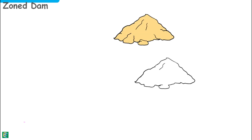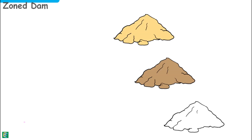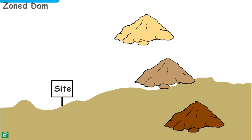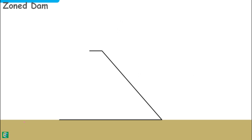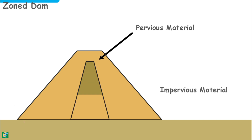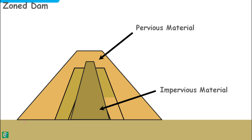The third category is zoned dams. When all types of soils are available in good quantity near the construction site, the dam is constructed in zones of different kinds of soil. Zones of pervious soil are kept in the dam exterior, impervious soil in the interior, and semi-pervious soil in less critical zones.